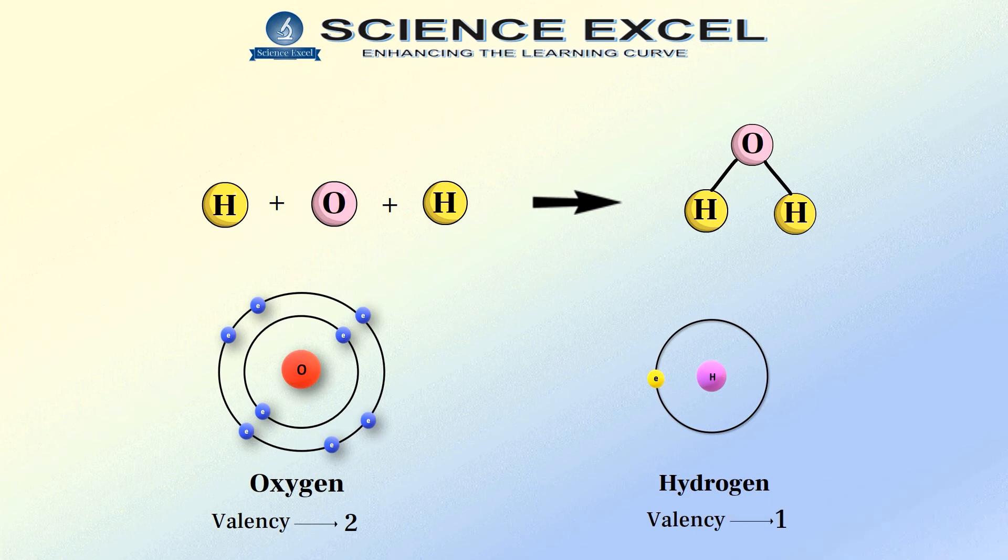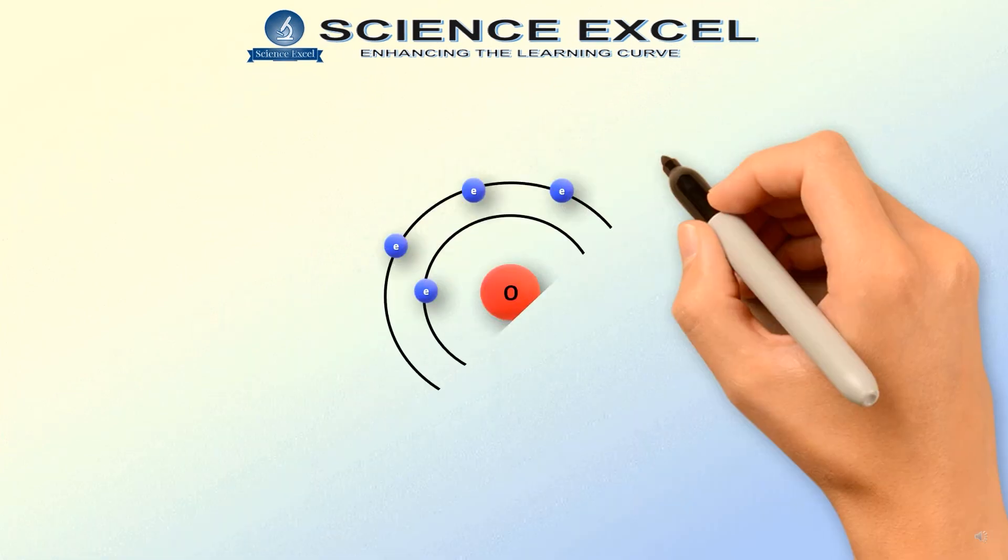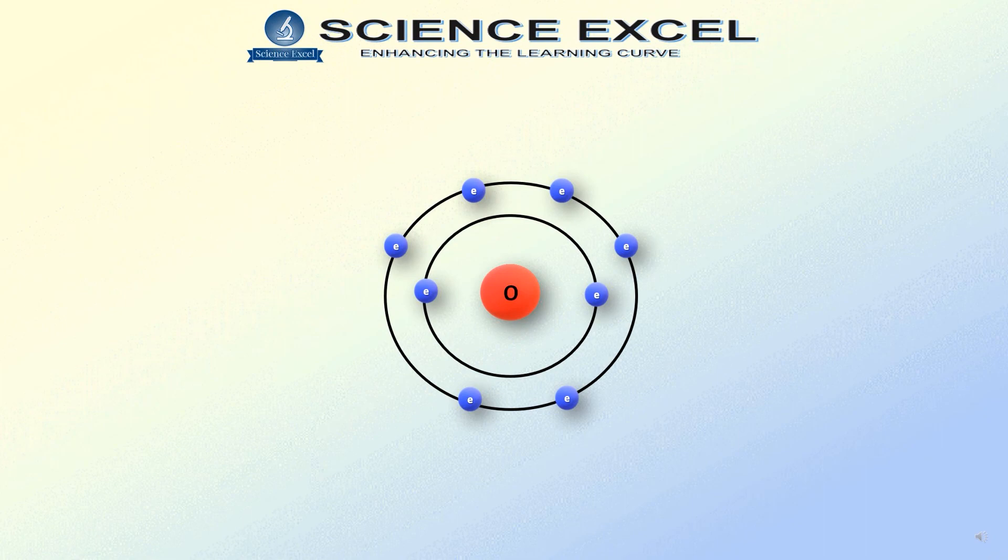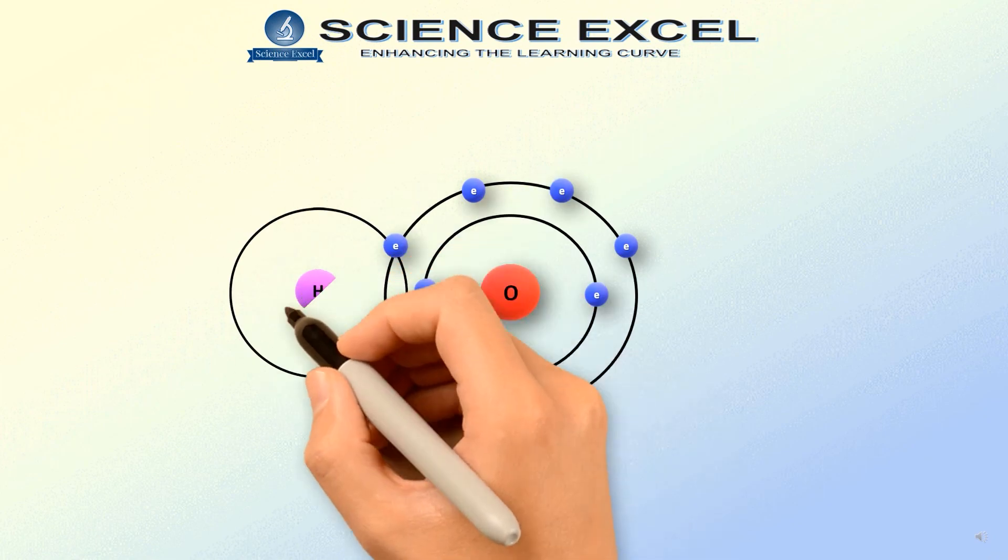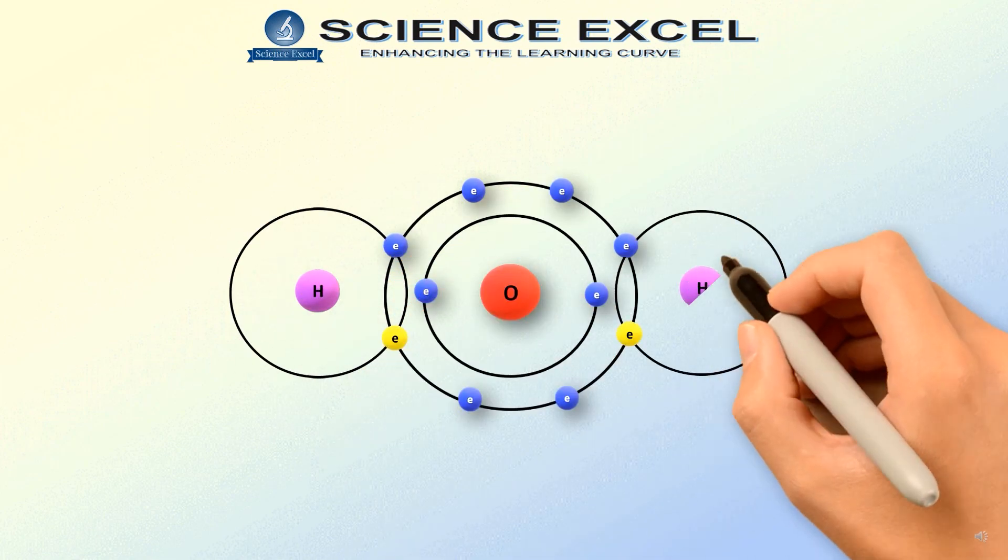Oxygen needs 2 electrons and hydrogen needs 1 electron to attain a stable state. Here, you will see that both the atoms need electrons. So, 1 atom of oxygen combines with 2 atoms of hydrogen to form a molecule of water.